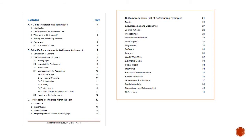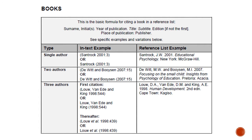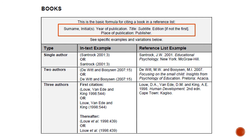We'll start with how to reference a book. If you look at Section D, you will see books are on page 23. If you turn to page 23 of the Referencing Techniques booklet, this is what you will find under the heading books. I want to draw your attention to the section at the top which has a red box around it — this gives us the formula for citing a book. The information we need is the surname and initial of the author or authors if there's more than one, followed by the year of publication, the title of the book, the edition, place of publication, and finally the publisher.